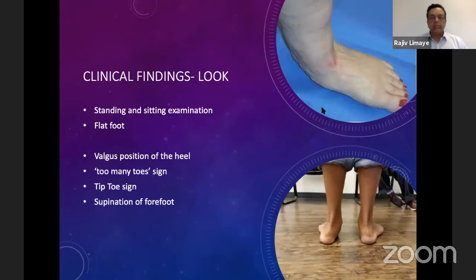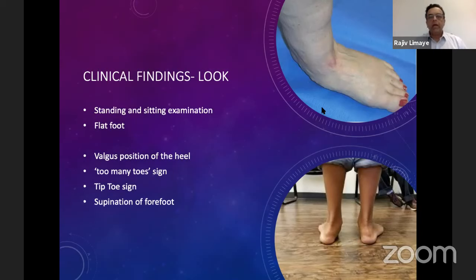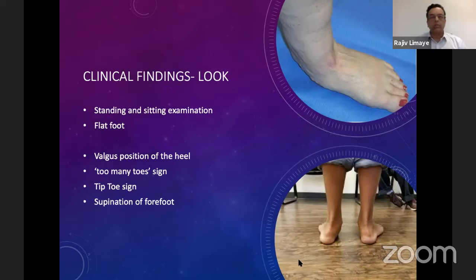Clinical assessment is important from the FRCS exam perspective, as this is a very common condition seen in the UK and there will be plenty of patients in the exam. All examination is done as look, feel, move, and special tests. When we look at these patients, we look at them standing and sitting, we look at their gait, and we see the deformity from all directions. We'll see the flat foot deformity on the medial side, but looking from the back, you will also see the valgus of the heel — the so-called too-many-toes sign — where you will see more toes on the lateral aspect of the foot. They will also show supination of the forefoot, along with the tiptoe sign.